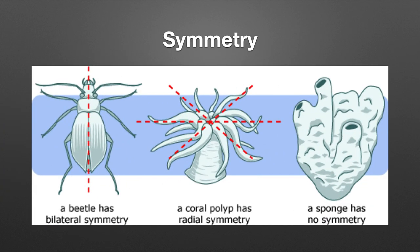Next is symmetry. We're going to refer to three types of symmetry in terms of different organisms. The first is bilateral symmetry — if you cut a beetle in half, you can fold one side over the other and they're identical. If we look at a coral polyp, jellyfish, or starfish, they have radial symmetry — they radiate out from the center like spokes on a wheel. A sponge is asymmetrical — no matter how you cut it, one side doesn't necessarily match the other.